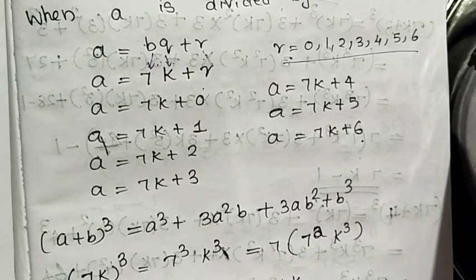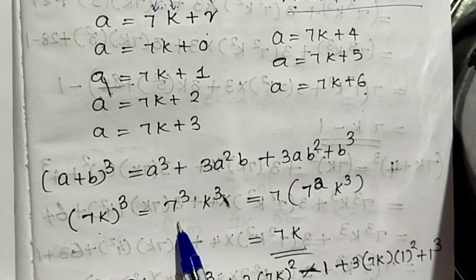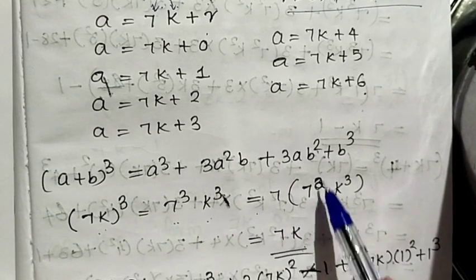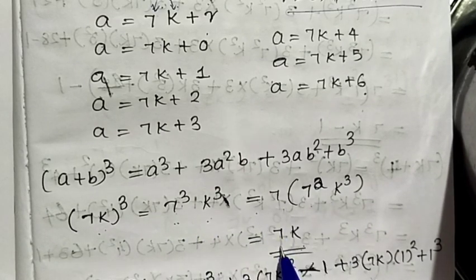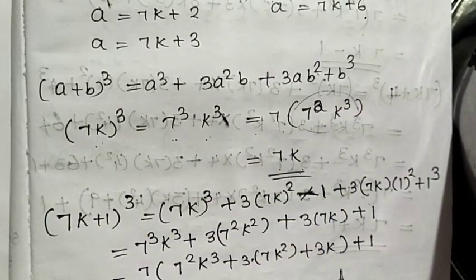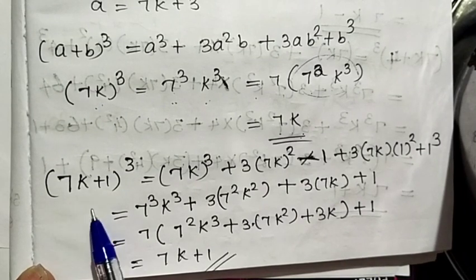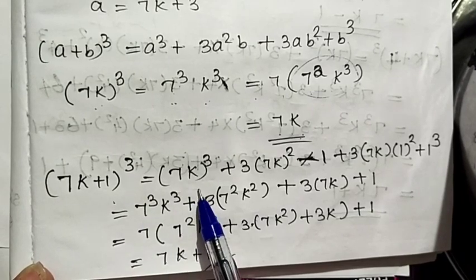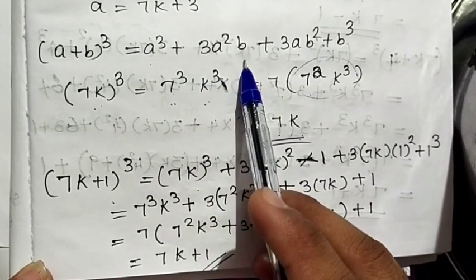That gives us 7k cubed, which is of the form 7 times (something), so it is of the form 7k. Now let me explain the next case. For a equals 7k plus 1, we expand (7k+1) cubed using the formula (a+b)³ = a³ + 3a²b + 3ab² + b³.